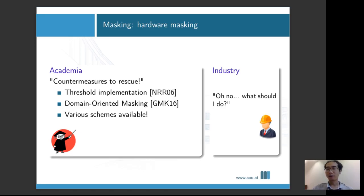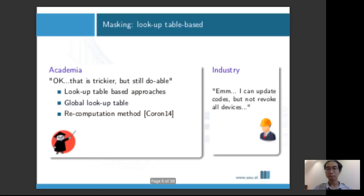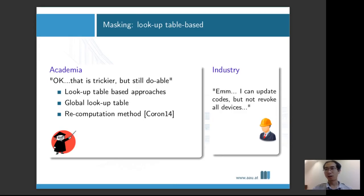The industry engineer learns about the threat of side-channel analysis and asks, oh no, what should I do? The researcher said, we have provided a lot of countermeasures. If you're into hardware masking, we have threshold implementation and domain-oriented masking. But the engineer says, we are a smaller company using other people's general purpose code. We cannot make hardware from scratch. Besides, all our devices are already on the market. I can update the codes by updating firmware, but there's no way I can revoke all the devices on the market right now.